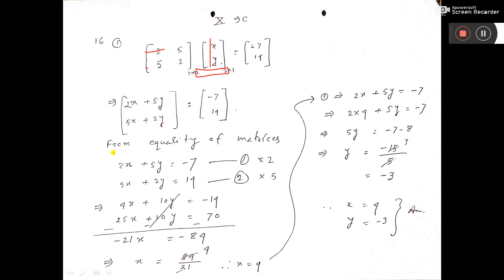This matrix is same. Now from equality of matrices you can write this element equal to this element that is written here. Again this element equal to this element is written here.